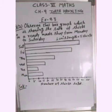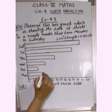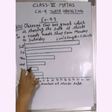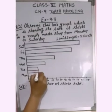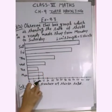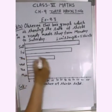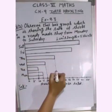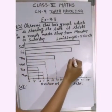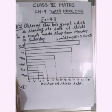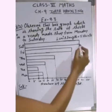Reading the bar graph: on Monday, 15 shirts were sold. On Tuesday, 10 shirts were sold. On Wednesday, 20 shirts. On Thursday, 30 shirts. On Friday, 50 shirts. And on Saturday, 60 shirts were sold.